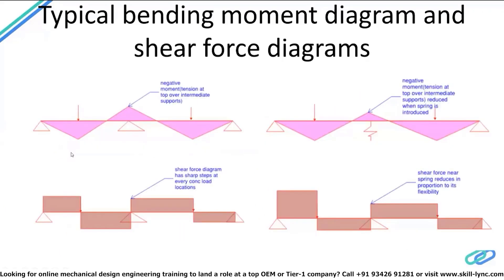Now let's look at an example of a two-span condition. This two-span beam is subjected to two point loads, one on each span, with an intermediate pin support providing continuity. The bending moment is zero at the outer pin supports since no rotational degree of freedom is restrained there. However, the intermediate support induces a negative moment in the beam, because the continuity of the beam over the support restrains the downward movement and effectively pulls the beam upward.